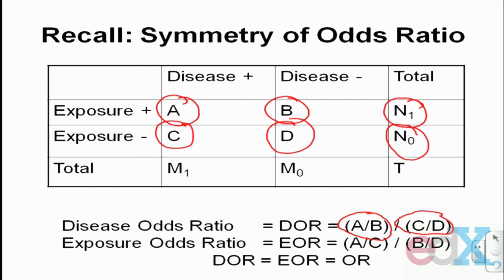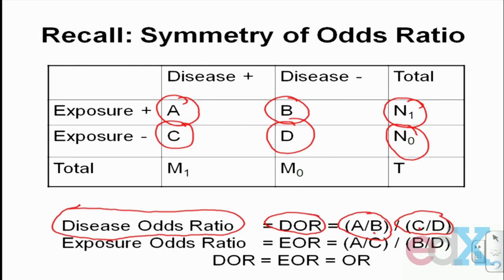As you've done in homework exercises, you could calculate the odds ratio — let's call it the disease odds ratio — because what we're measuring is the odds of developing disease separately among the exposed (the top row) and non-exposed (the second row). It's A over B divided by C over D. Let's label that DOR for disease odds ratio.